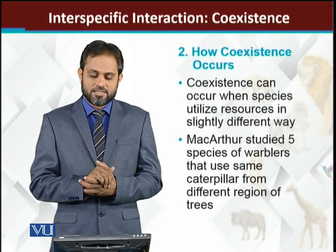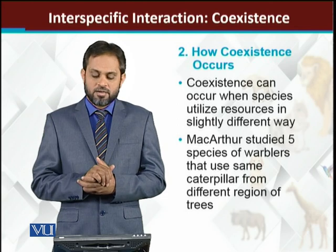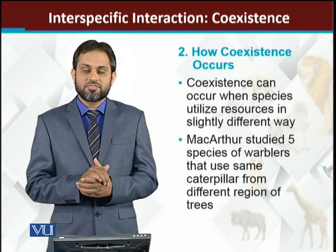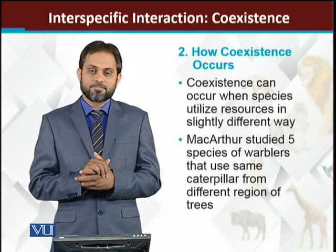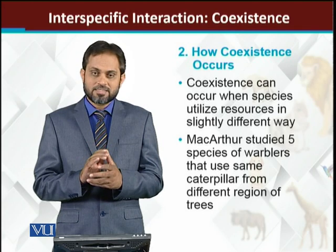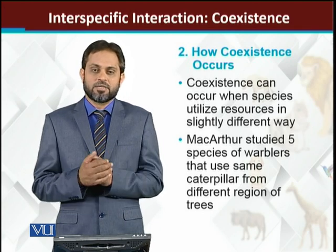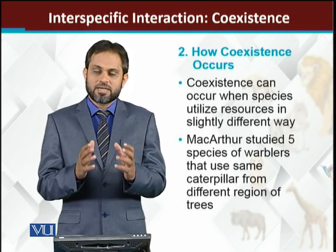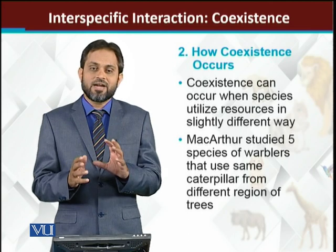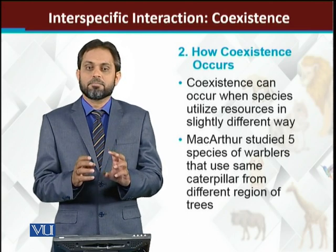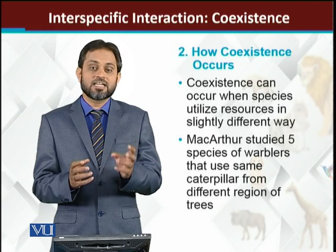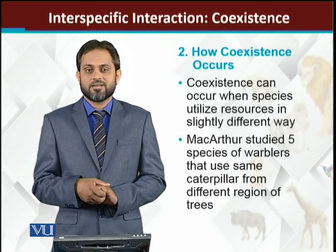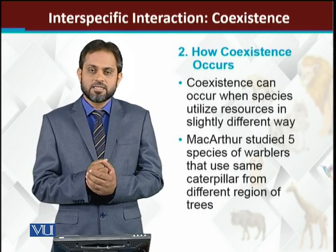The example here is MacArthur's experiment. MacArthur was a scientist who studied five species of birds — the warblers. These warbler birds actually feed on caterpillars of the same type. MacArthur observed that on a single tree, five different species of warblers were living on the same type of trees and having the same type of food. He studied why there was no competition among them.